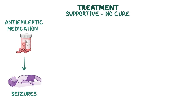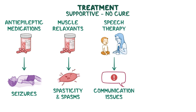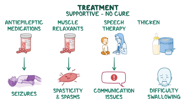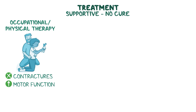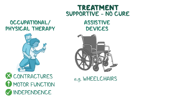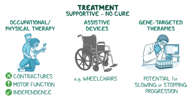Treatment for Alexander disease is primarily supportive, as there is currently no cure. Seizures can be managed with anti-epileptic medications, and spasticity and involuntary muscle spasms may improve with muscle relaxants. Communication issues can be assisted with speech therapy, and individuals with difficulty swallowing may benefit from thickened liquids or modified diets to reduce the risk of choking. Occupational and physical therapy can help prevent contractures, improve motor function, and maintain independence. In some cases, assistive devices like wheelchairs may be necessary for mobility. Advancements in gene-targeted therapies offer potential for slowing or even stopping the progression of the disease in the near future.